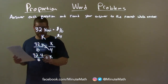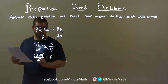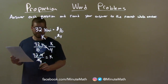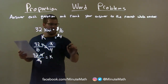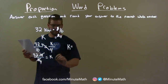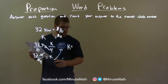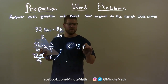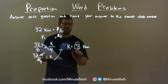To simplify, 16 and 4 are both divisible by 4: 16 divided by 4 is 4, and 4 becomes 1. So K equals 32 divided by 4, which is 8. So 8 kiwis is how many Lisa can buy with $4.